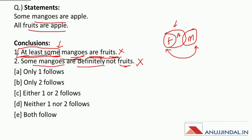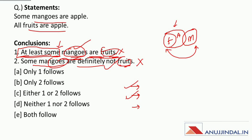Since both the conclusions are false, let us check whether it is a case of either-or. Point one: one statement must be positive — yes, this is positive — and the other must be negative — yes, this is negative. So the first point is satisfied. Second point: elements should be the same — mangoes, fruits; mangoes, fruits — yes. Third point: both conclusions must be false — yes, dono conclusion false hain. Which means this is a case of either-or. Therefore the correct answer will be C — either one or two follows.